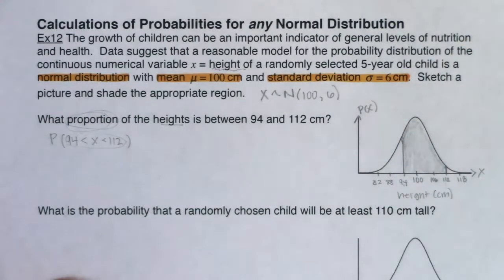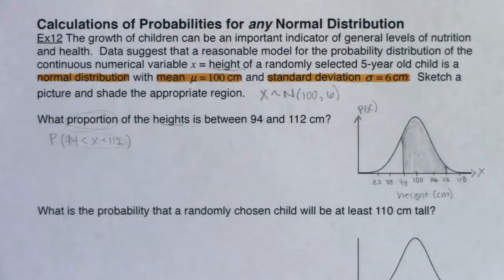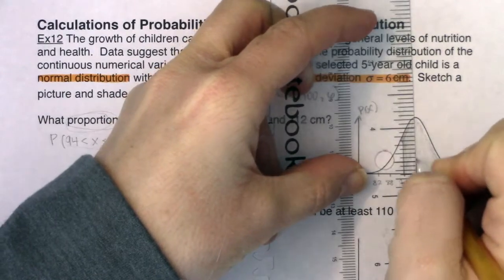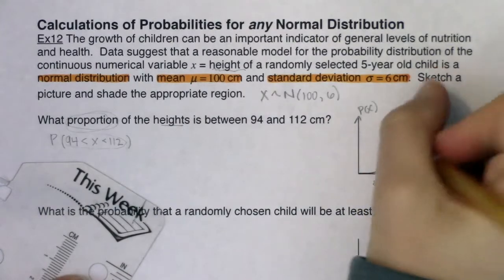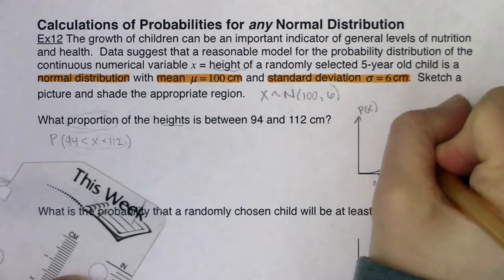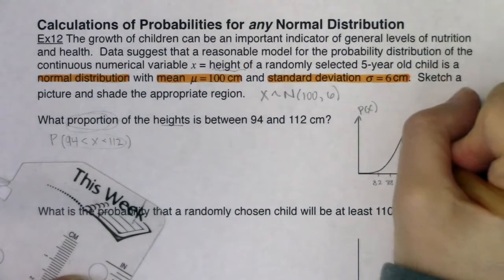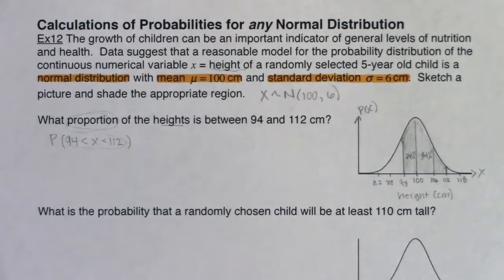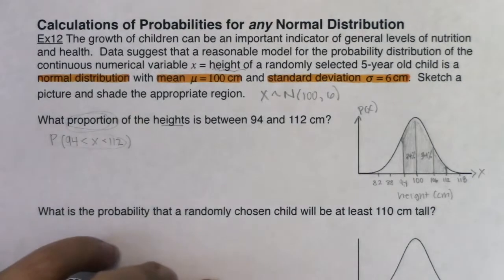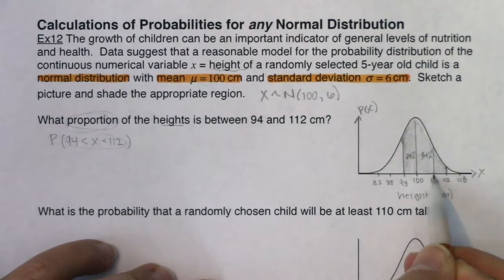We can do this a few ways. Let's start with the empirical rule. I can break down the areas under the curve: from the empirical rule, the region from the mean to one deviation above has 34% of the area, and the region from the mean to one deviation below also has 34%, since going from one deviation below to one deviation above gives 68%.